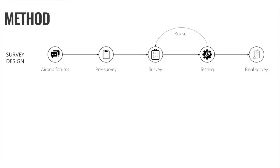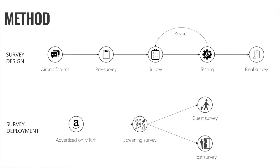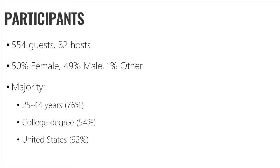To explore these research questions, we used a survey methodology. We designed the survey iteratively — we first looked at forums to get a sense of the kinds of issues that people raise. Then we created a pre-survey where all questions were open-ended, to get a range of responses so that we could choose good multiple-choice options. We had about five rounds of iterative testing, which helped us revise and polish the final survey. We deployed it on Amazon MTurk, first using a screening survey to identify Airbnb hosts and guests from the MTurk population, then giving guests the guest version and hosts the host version.